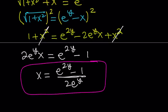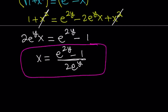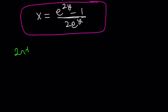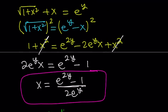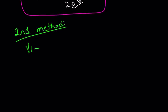Now let's go ahead and talk about the second method. Obviously our second method is different — it definitely contains a different approach. We already know that square root of 1 plus x squared plus x is equal to e to the power y, and our goal is to solve for x, but we're not going to use the first method here. So can we approach this problem differently?